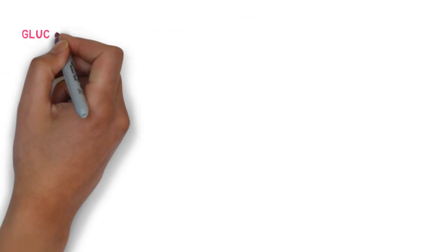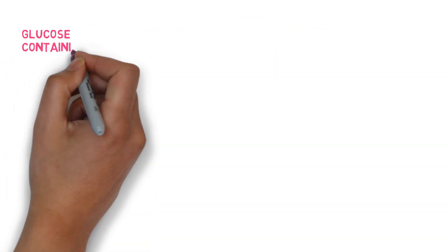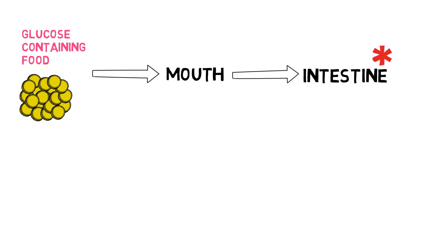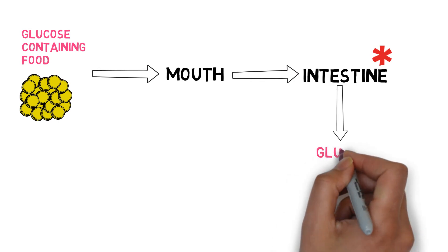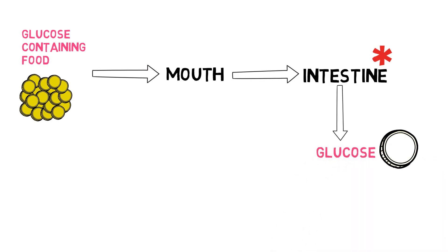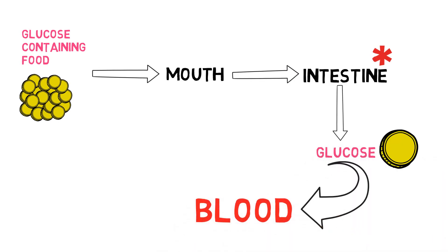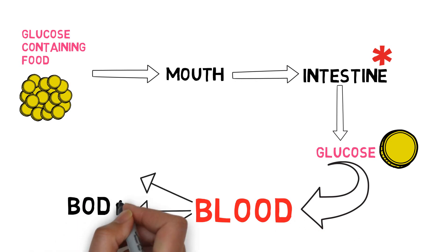When we eat a glucose-containing food, it digests in the intestine and is absorbed into the blood via the intestinal epithelium, and through the blood it is transported throughout the body.